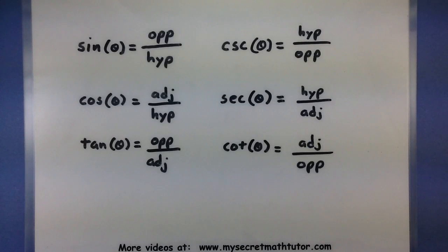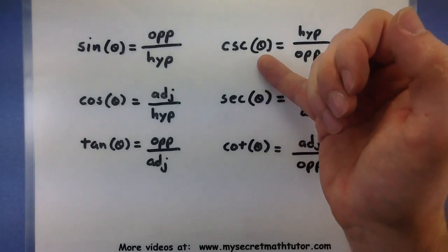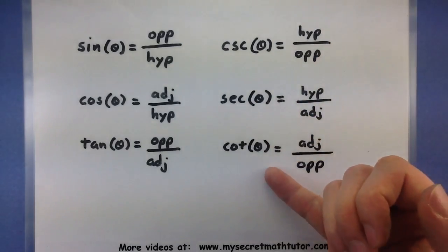At their core, what these trigonometric functions do is they compare sides in a right triangle, usually in relation to some sort of given angle. So here I have sine, cosine, tangent, cosecant, secant, and cotangent.